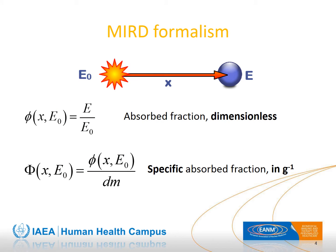This is the formalism. Assume a source of radiation of energy E0 that emits isotropically in an infinite homogeneous medium. If at a distance x from the emission point the absorbed energy in a small volume is E, then the absorbed fraction is E (absorbed energy) divided by E0 (emitted energy). The absorbed fraction is dimensionless, varying between 0 and 1, and gives an idea of the efficiency of the irradiation. To compare different absorbed fractions in different media, we divide by the mass dm of the small volume, obtaining the specific absorbed fraction Φ (capital phi), expressed in g⁻¹.